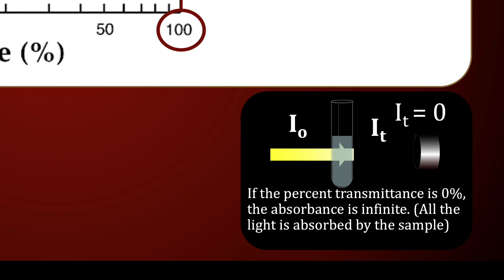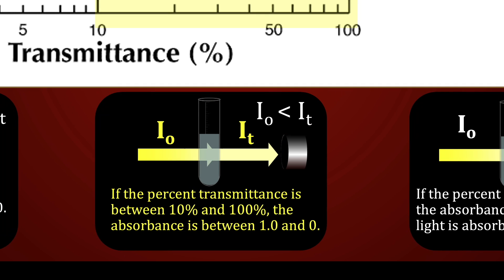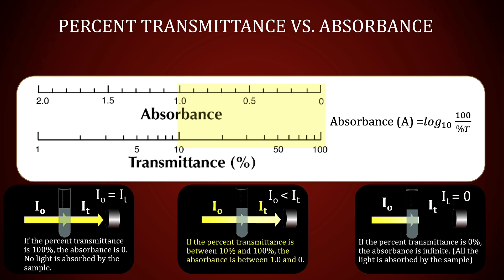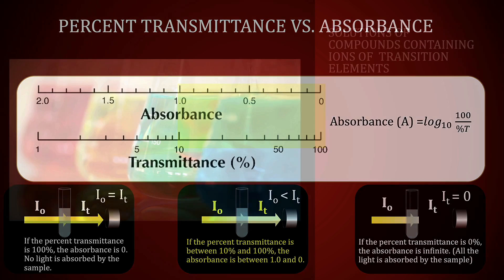If the percent transmittance is 0%, this means the sample absorbed virtually all of the light. Understandably, neither of these scenarios would be very useful from an analytical standpoint. Optimally, the absorbance should be between 0 and 1.0 to obtain the most accurate results.